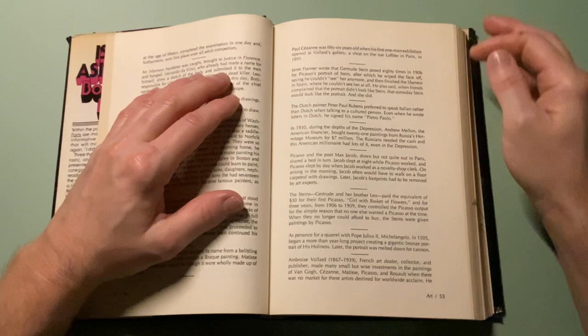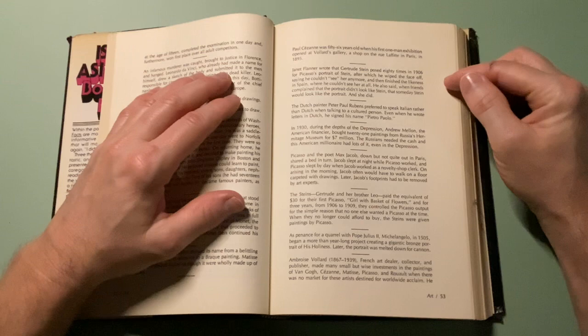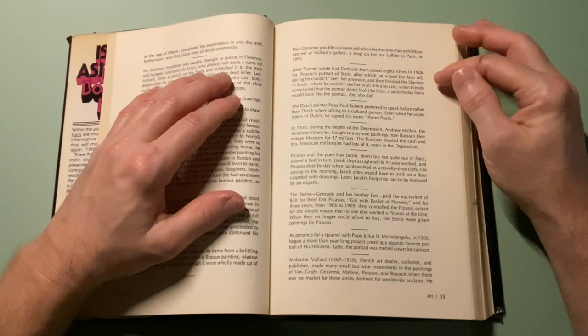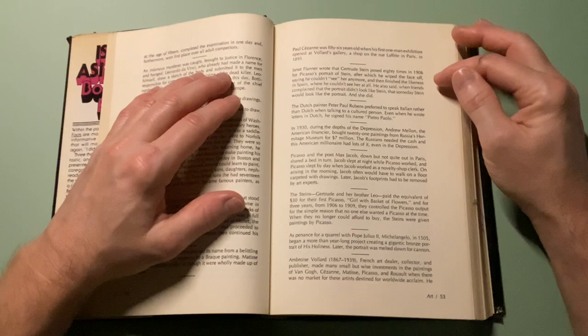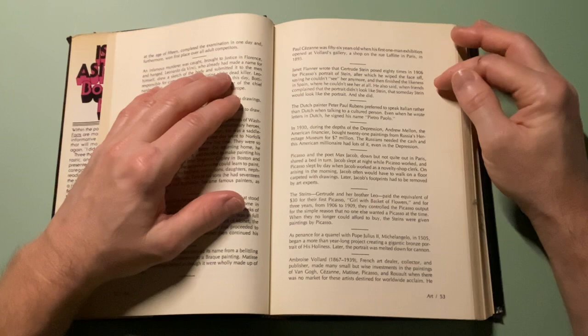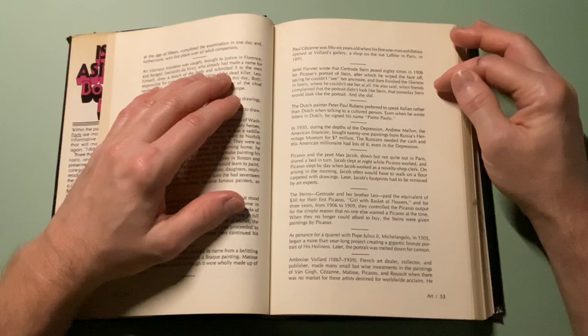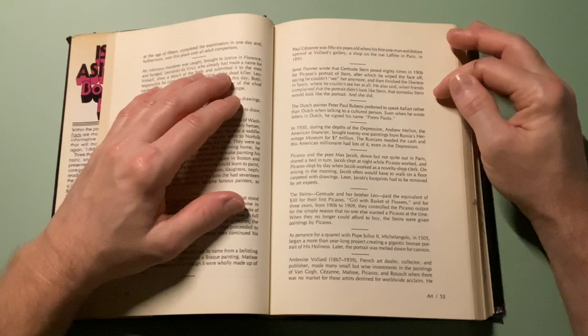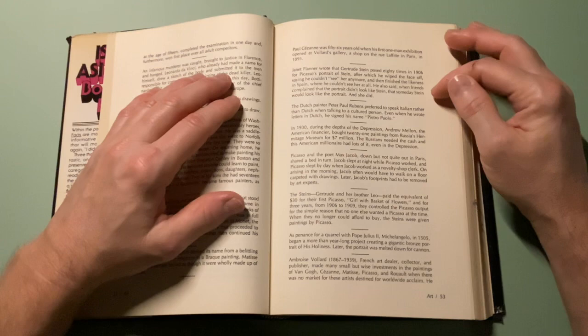Janet Flanner wrote that Gertrude Stein posed 80 times in 1906 for Picasso's portrait of Stein, after which he wiped the face off, saying he couldn't see her anymore. He also said, when friends complained the portrait didn't look like Stein, that someday Stein would look like the portrait, and she did.